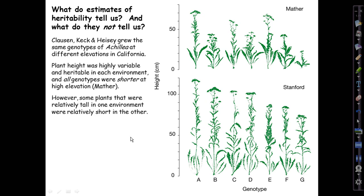However, some plants that were relatively tall in one environment were relatively short in the other. For example, look at E, which was the second tallest at Mather, nearly as tall as A, which was tallest in both environments. It was relatively tall there, relatively short at Stanford—it was the third shortest. And you can find many other examples like that, such as B, which is short at Mather and tall at Stanford.